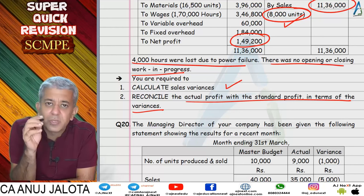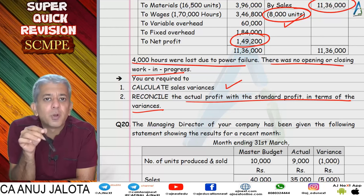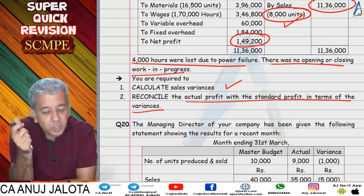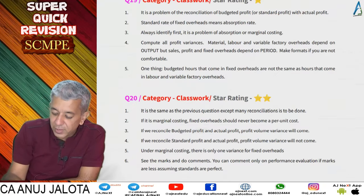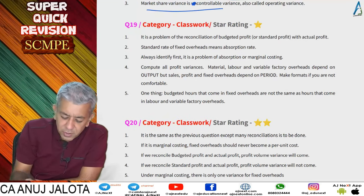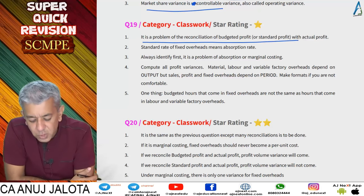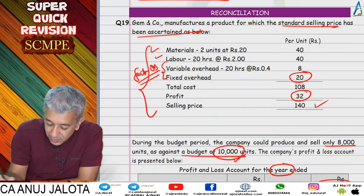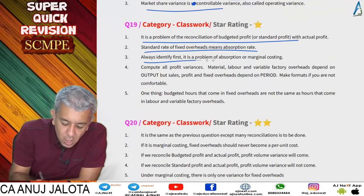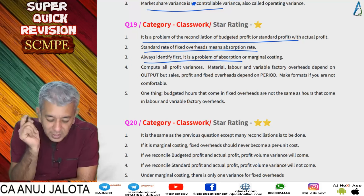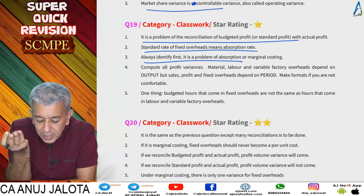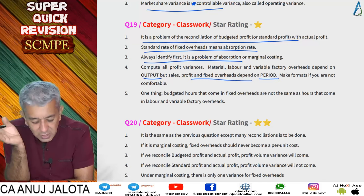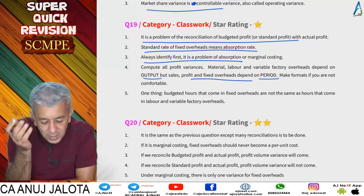Fixed overheads depend on period — one year here. We find all variances and make a reconciliation statement. The reco statement always starts with budgeted profit and ends with actual profit. Put all profit variances in between, but don't put a variance whose breakup you've already included — put the breakups instead. This is a one-star question on reconciliation of budgeted/standard profit with actual profit. Always identify first whether the problem is on absorption or marginal costing, then compute all variances.